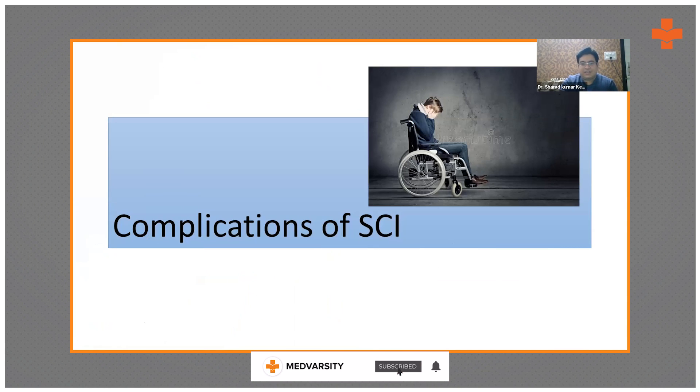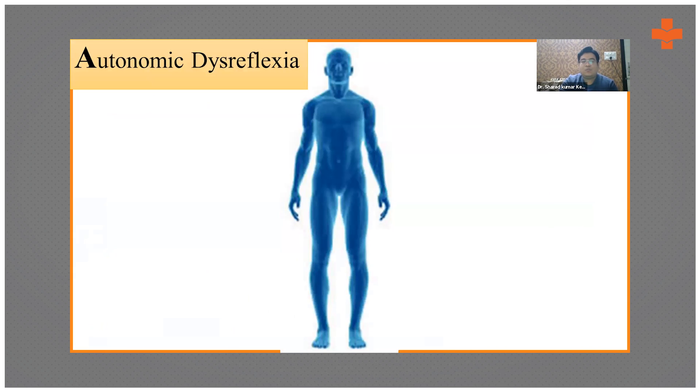Next, what are the complications of SCI, spinal cord injury? You have seen the limitations. Now moving on to the complications, because once the patient is acutely stabilized, if the rehabilitation part is not started from day one, there can be a lot of complications. One of the most important complications is autonomic dysreflexia.